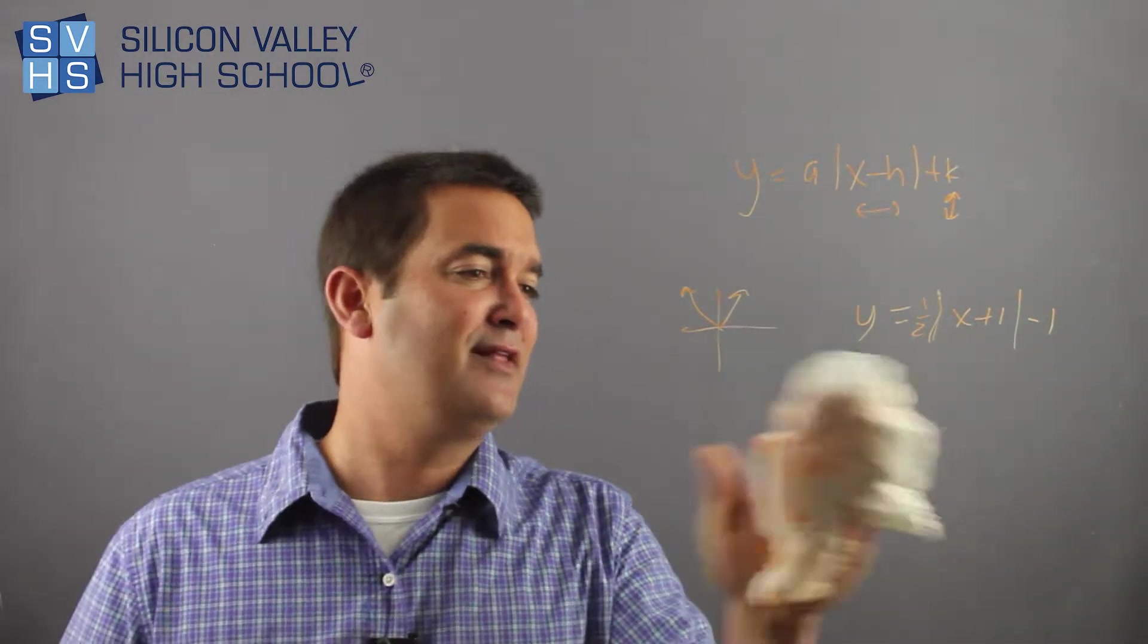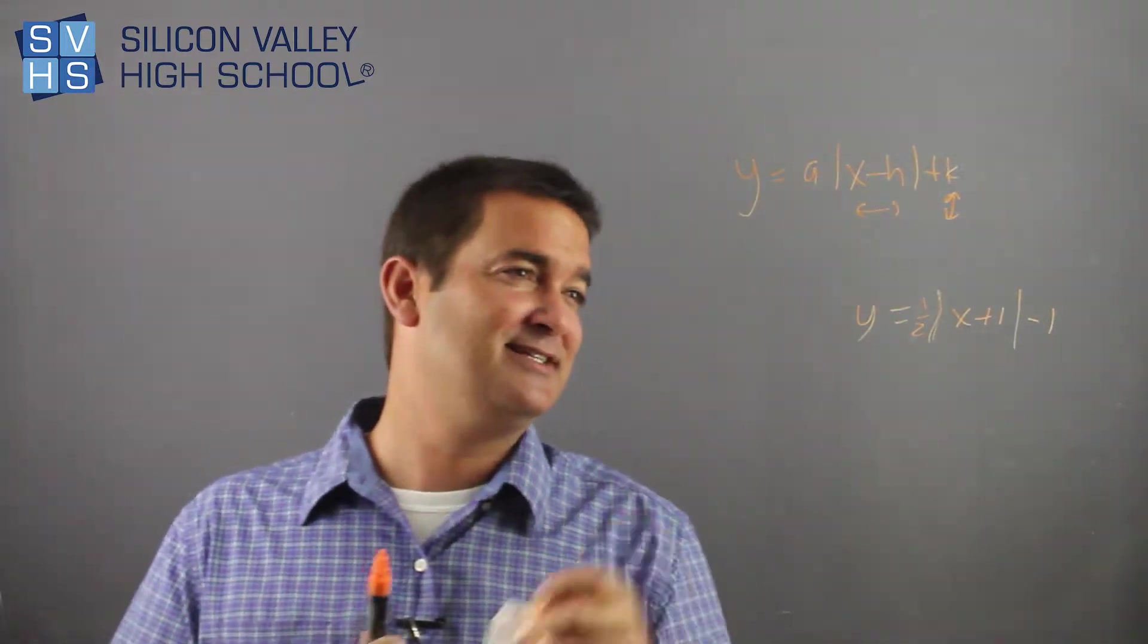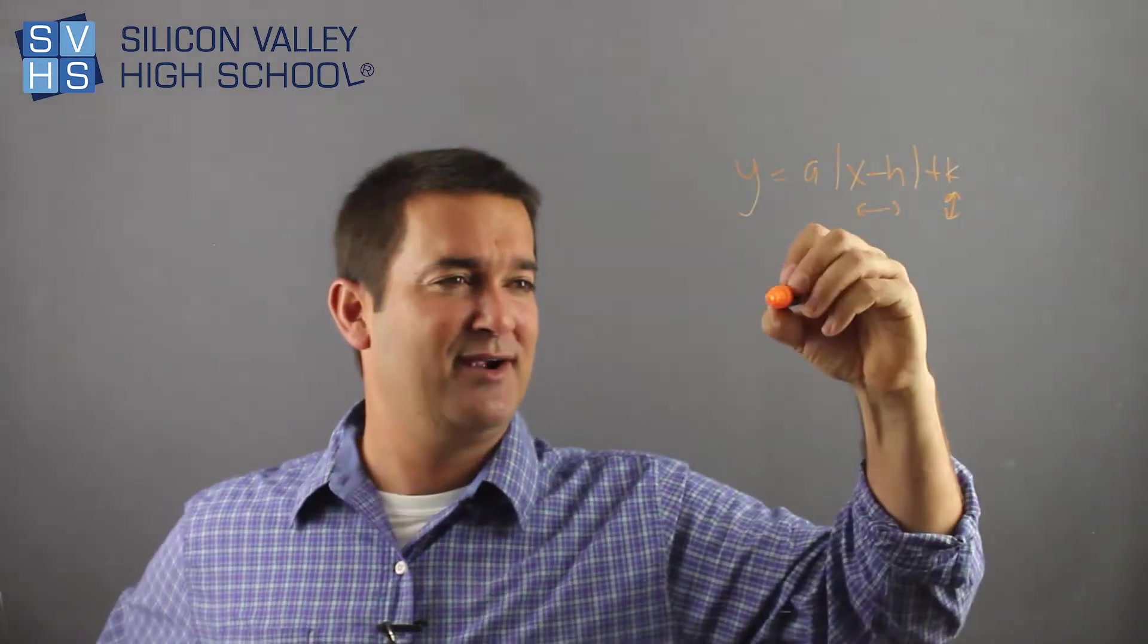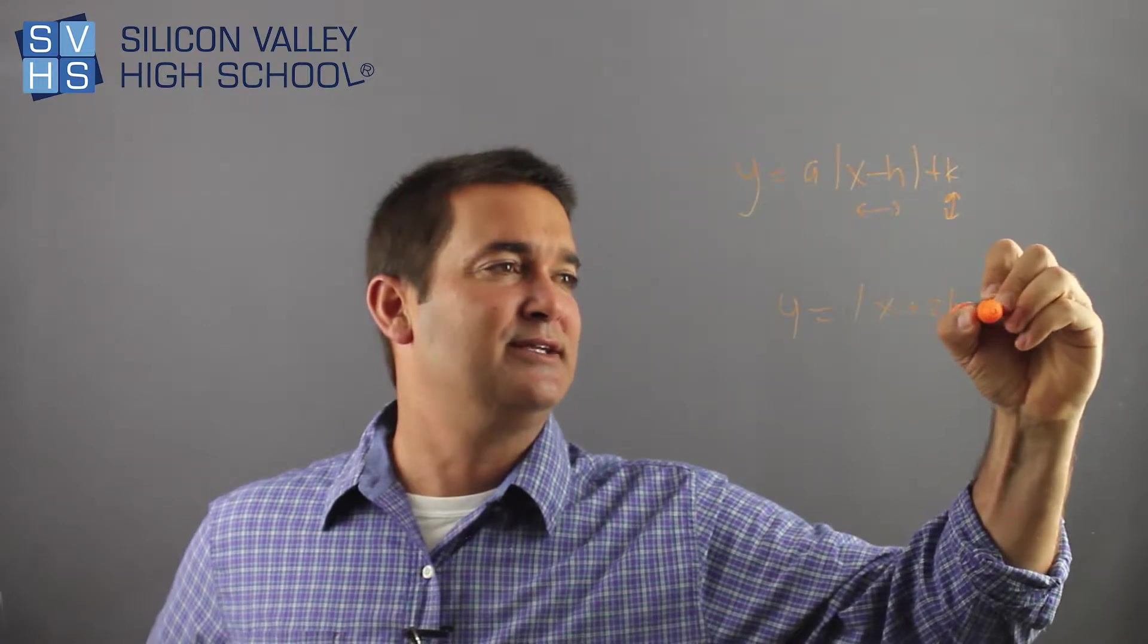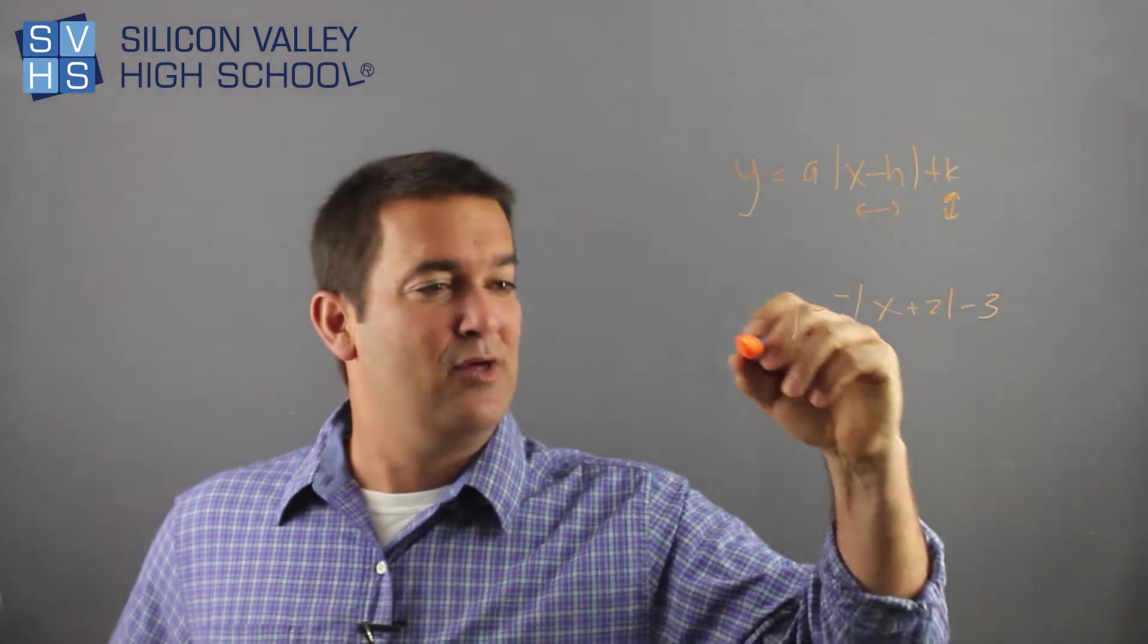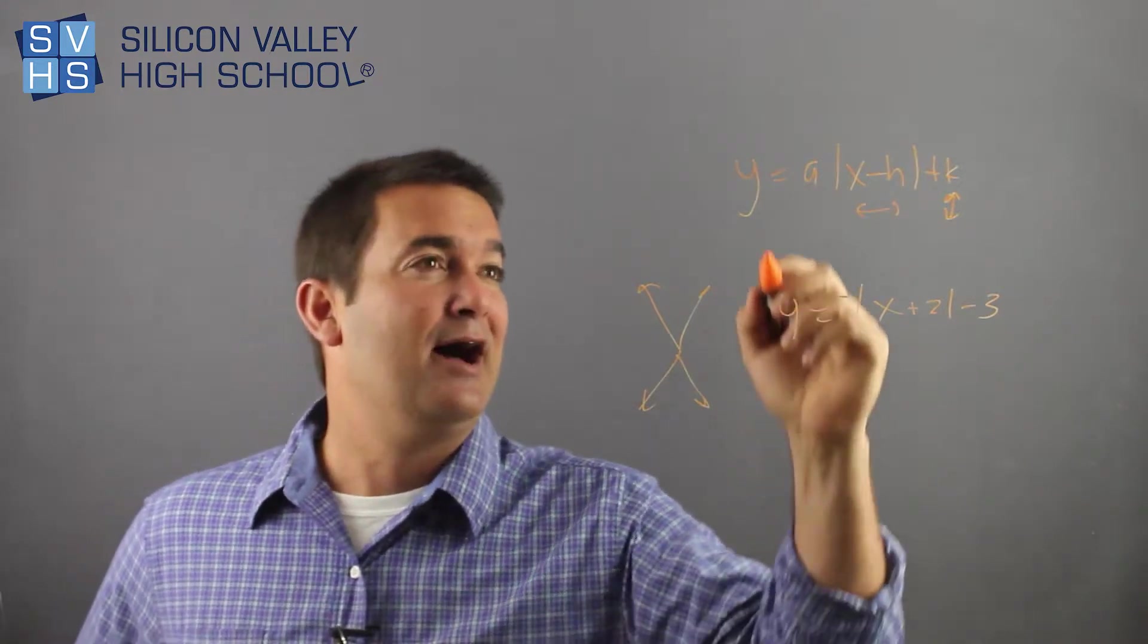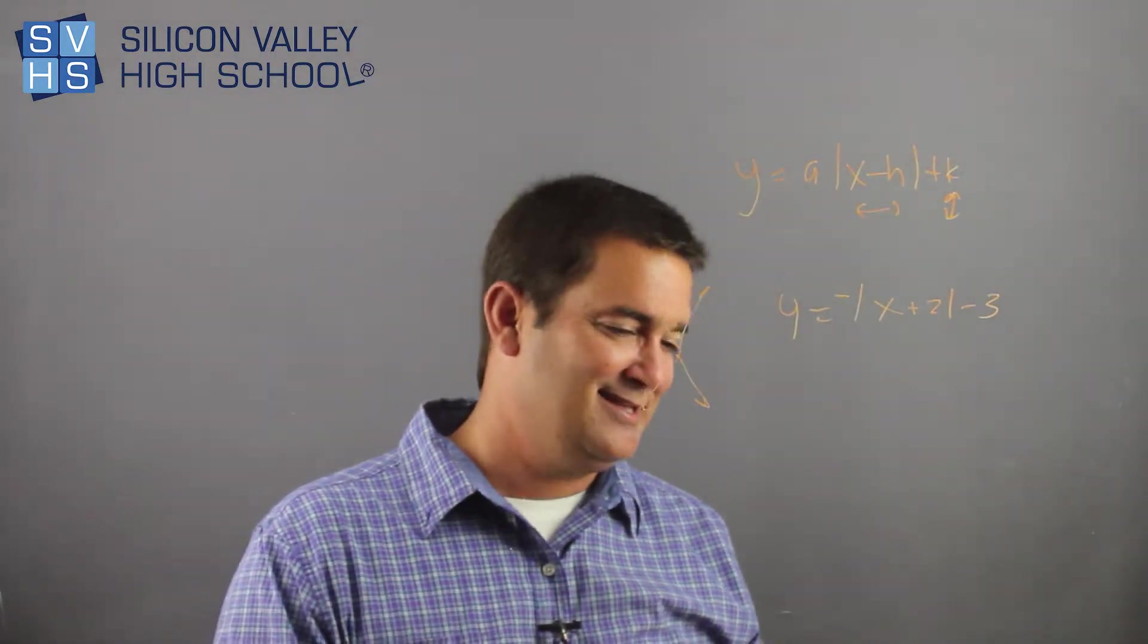And now the other thing that you probably assume because of your past experience with parabolas is if you make A negative. So again, you have something generic like Y equals X plus 2 minus 3. The minute you put a negative in front of that, a negative 1 or a negative 5, any negative, the whole thing used to be a V. And now it flips and it's upside down. A negative A flips your V upside down.